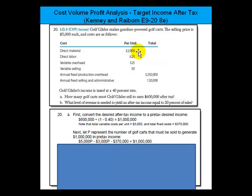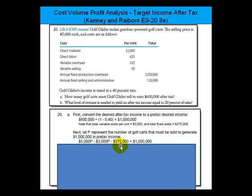Total variable cost is the $2,000 plus $625 plus the variable overhead and selling. So if we take 325 and 50, that's 375. 375 and 625 gets us 1,000. 1,000 plus 2,000 is 3,000 — that's where the $3,000 comes from. Then we subtract the fixed costs, which is the total of both numbers: the $250,000 and the $120,000.